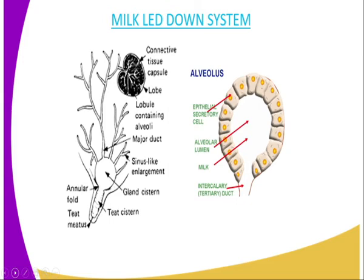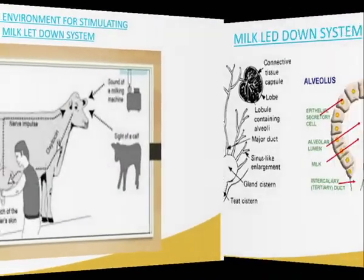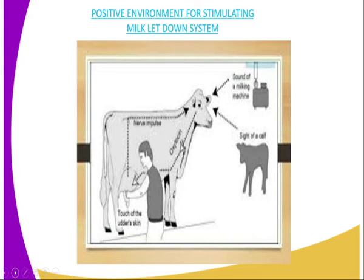During milking activity, the milk is pressed out by the milking man and therefore gets into the bucket. The positive environment, as stated earlier, includes the sight of the calf — you can see there is a calf in front of the cow being milked. You can also see the arrow showing the hormone oxytocin released from the brain going to the mammary gland. Also, touching the udder with a warm towel — whenever you wash the udder with warm water, it also stimulates the pituitary gland to produce hormone oxytocin.